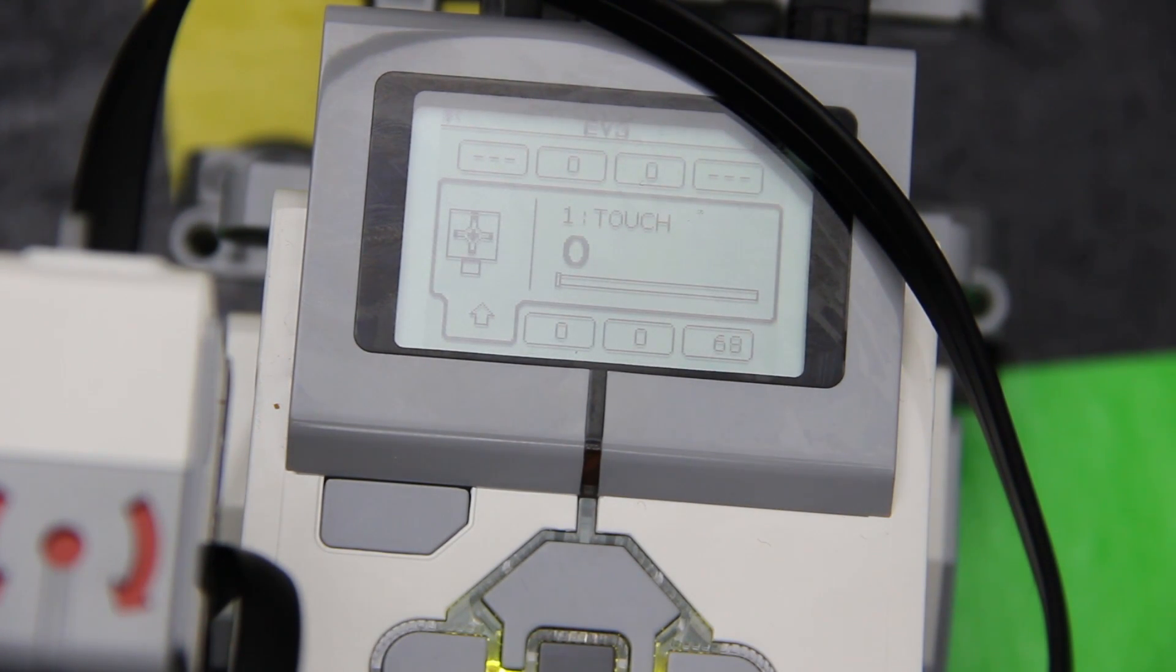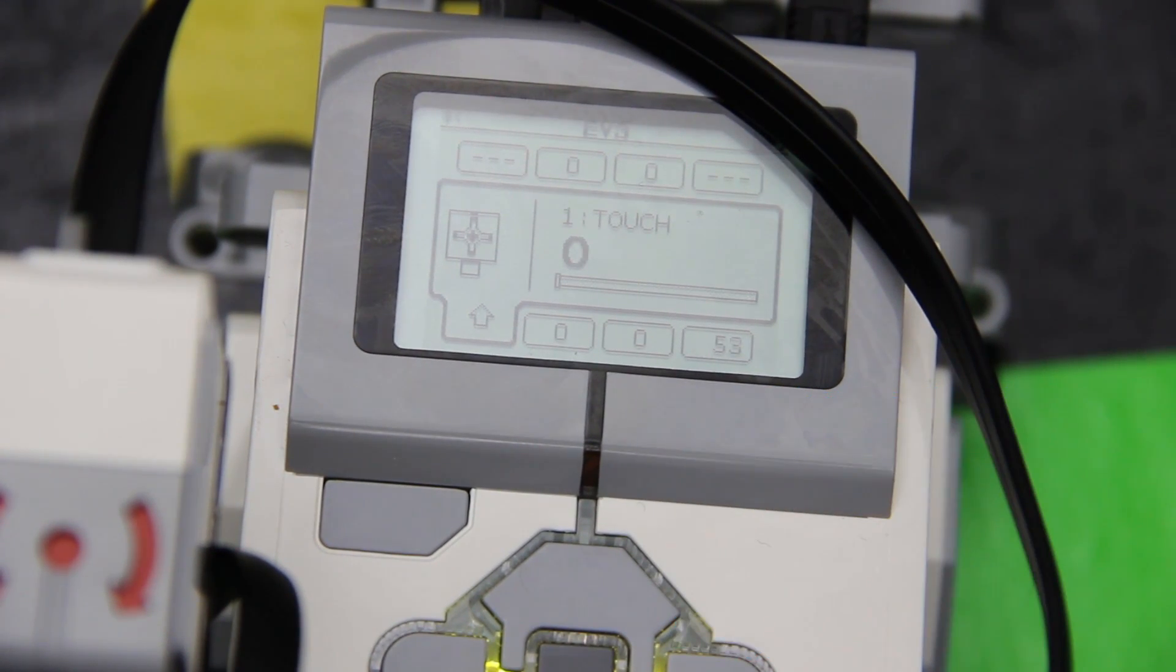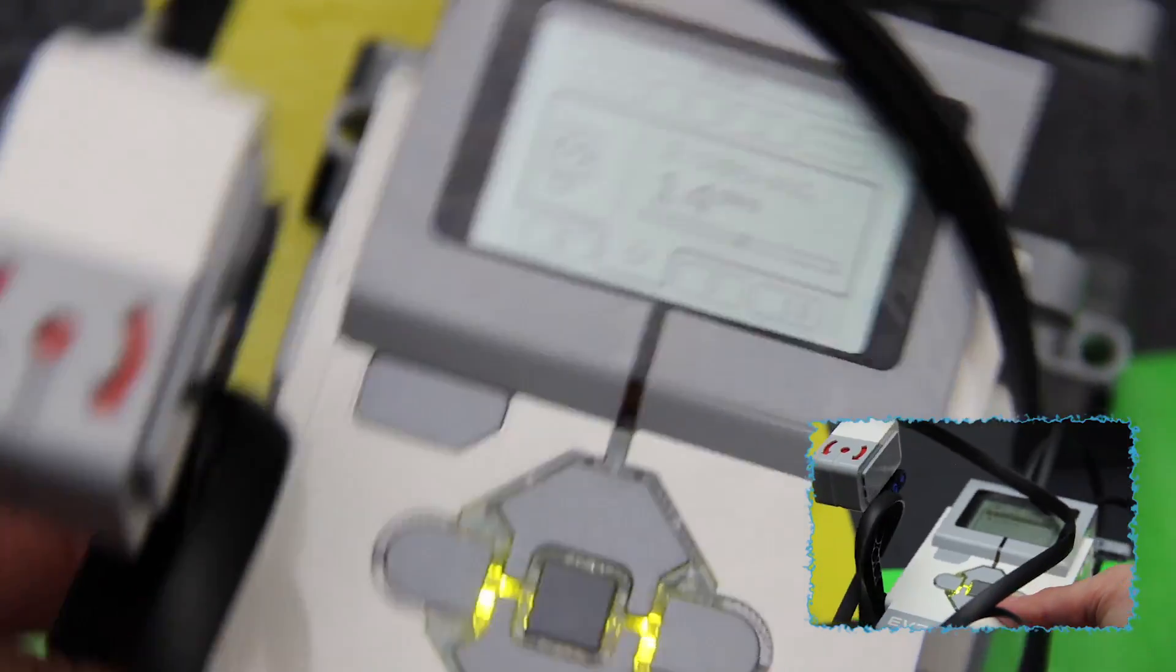So the touch sensor is plugged into port 1 and if you press the button you can see it changes from 0 to 1. And then over in port 2 we have the gyro sensor and as you turn the robot left and right you can see it changes the number of degrees.